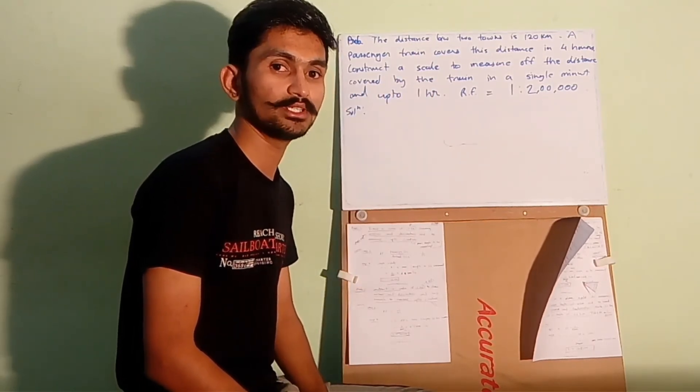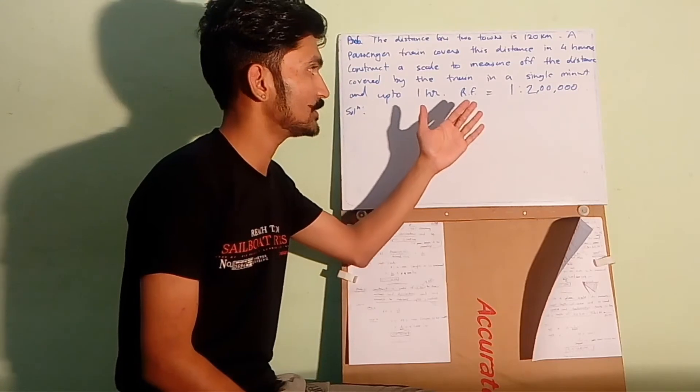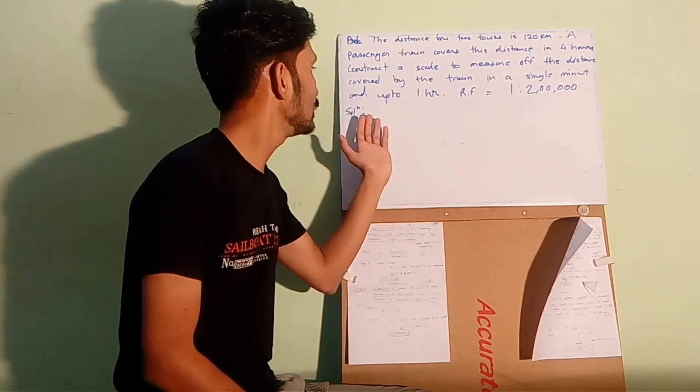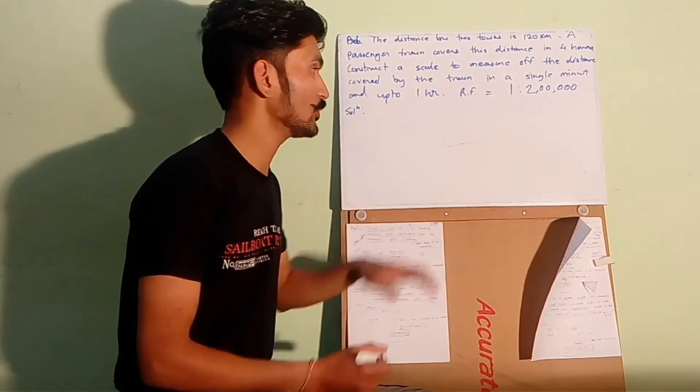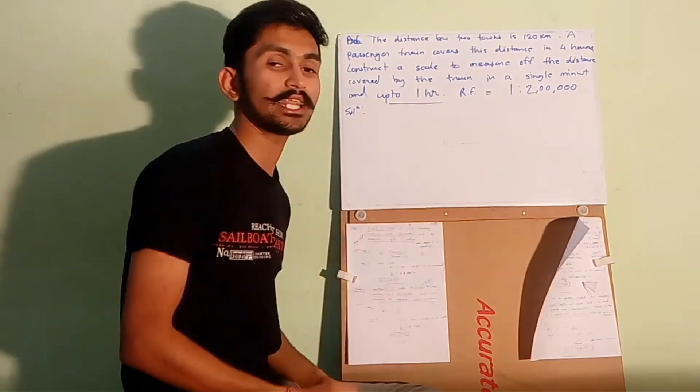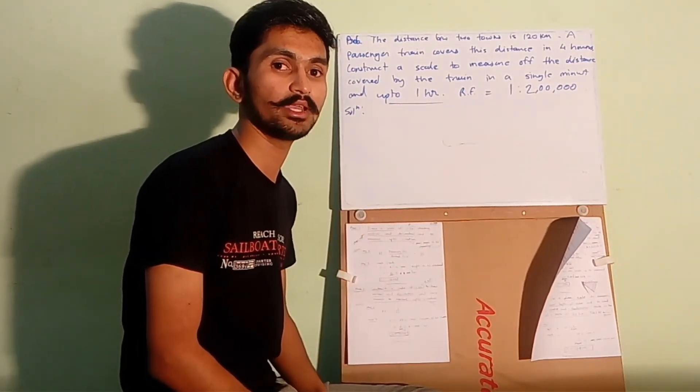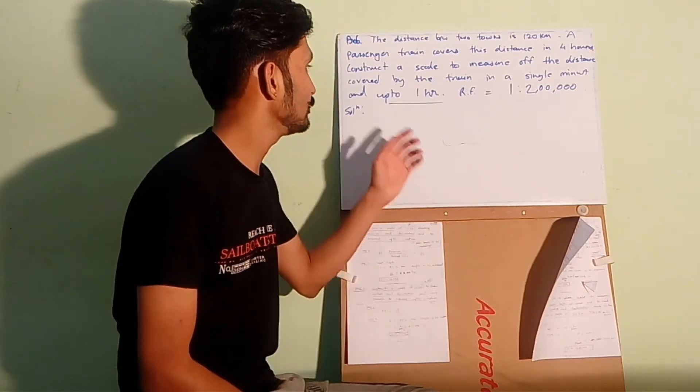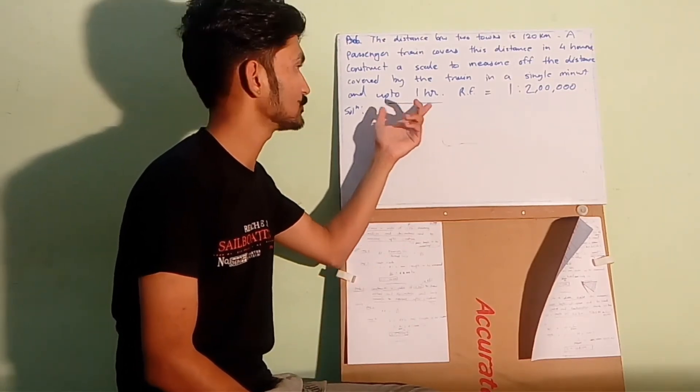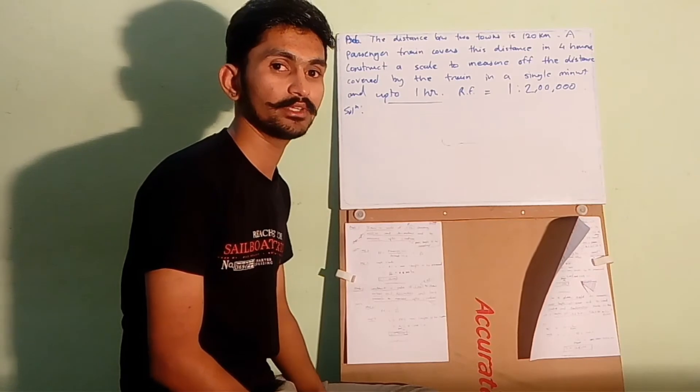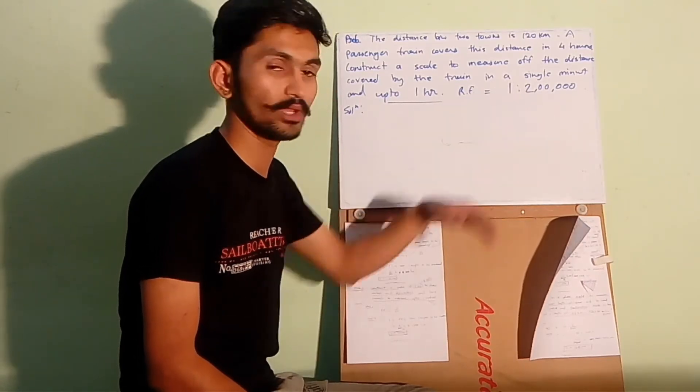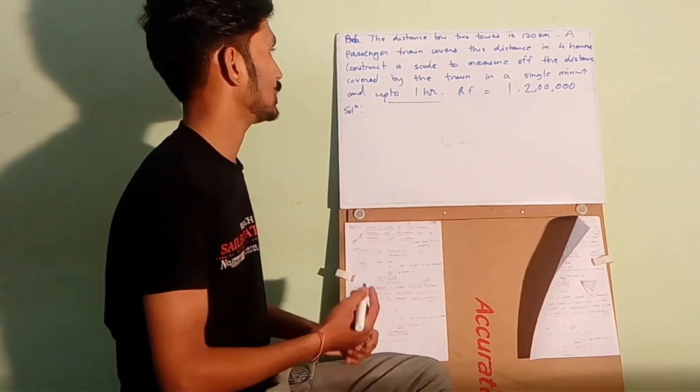Construct a scale to measure the distance covered by the train in a single minute and up to 1 hour. So this data will help us to get the maximum length to be measured, because we have to show up to 1 hour. And the RF is directly given in the question which is 1 is to 2 lakh. So let's start.